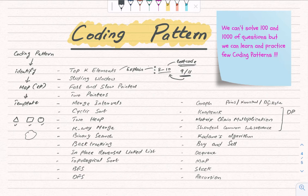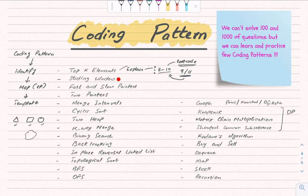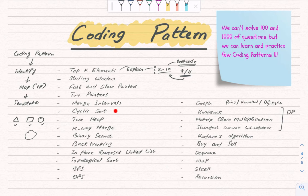The coding patterns I'll cover: first is Top K Elements, second is Sliding Window, then Fast and Slow Pointers (the hare and tortoise problem), Two Pointers, Merge Intervals, and Cyclic Sort — where we sort elements in O(n).